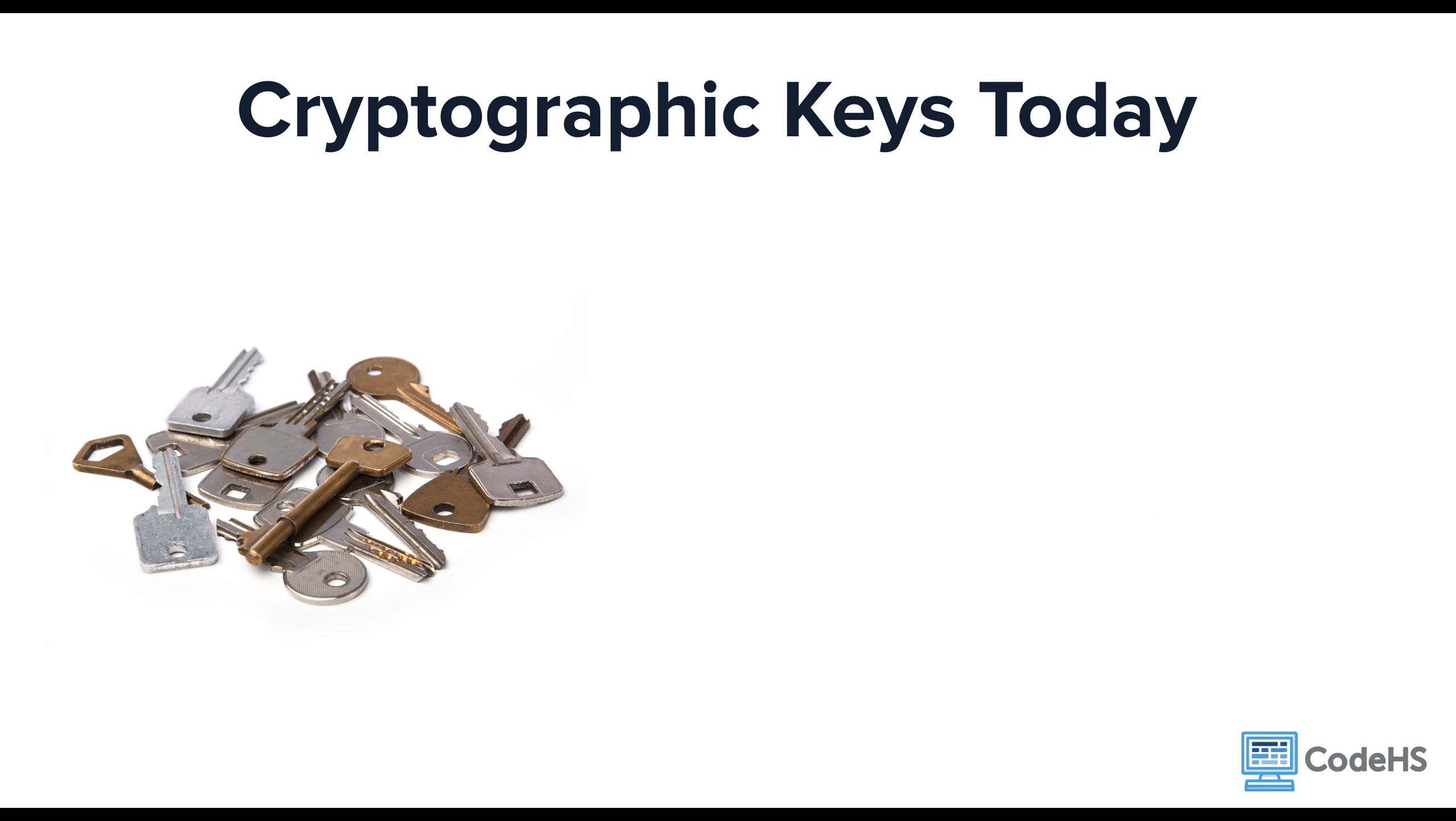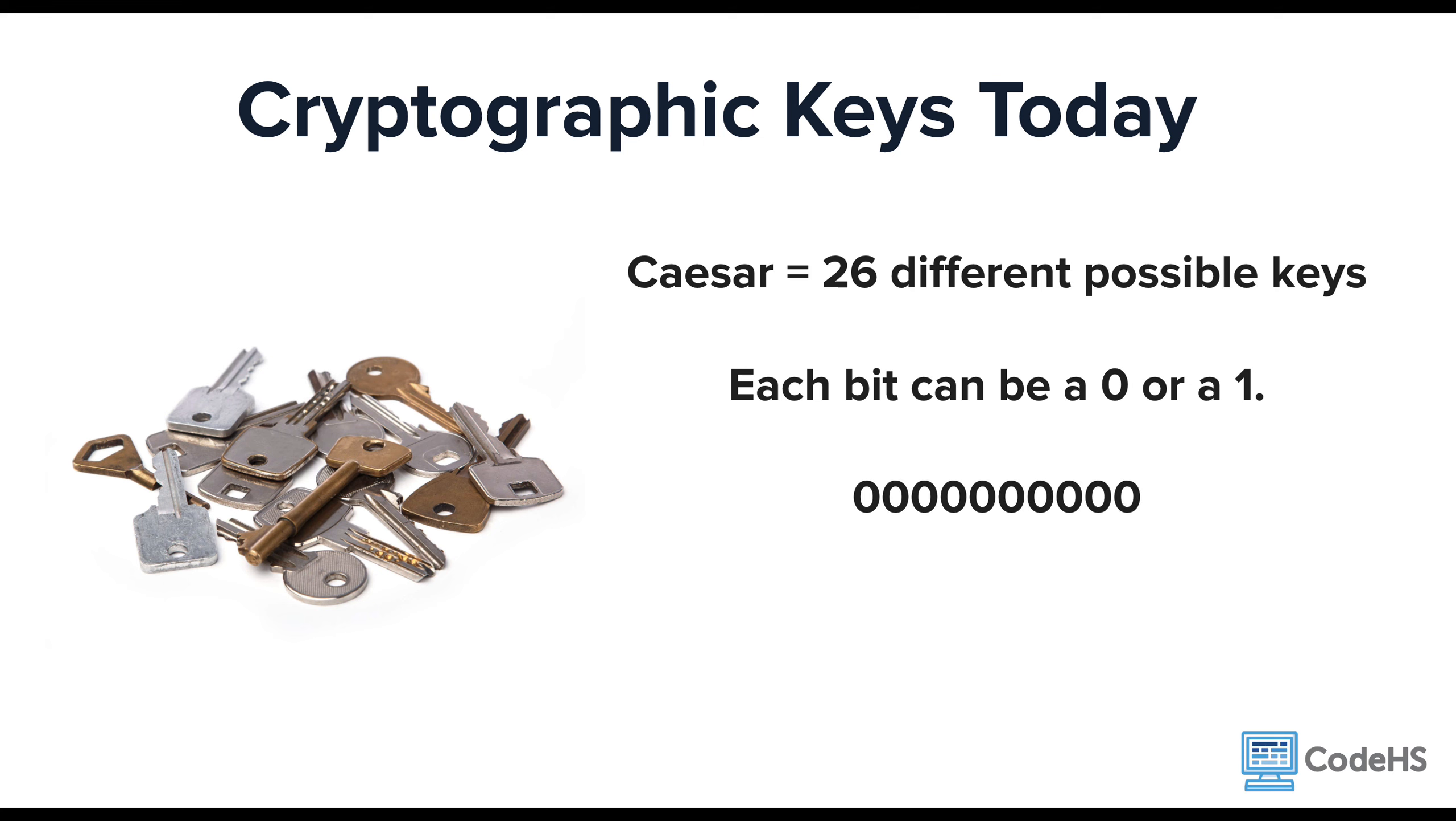Cryptography has obviously evolved since the time of Caesar and Vigenère. Caesar only had a choice of 26 different keys. Cryptography today measures keys in bits. A bit is like a place value. Each bit or place value can be a 0 or a 1. For example, if you use a 10-bit key, then your key could be 10 zeros, it could be 10 ones, or it could be any combination of zeros and ones.